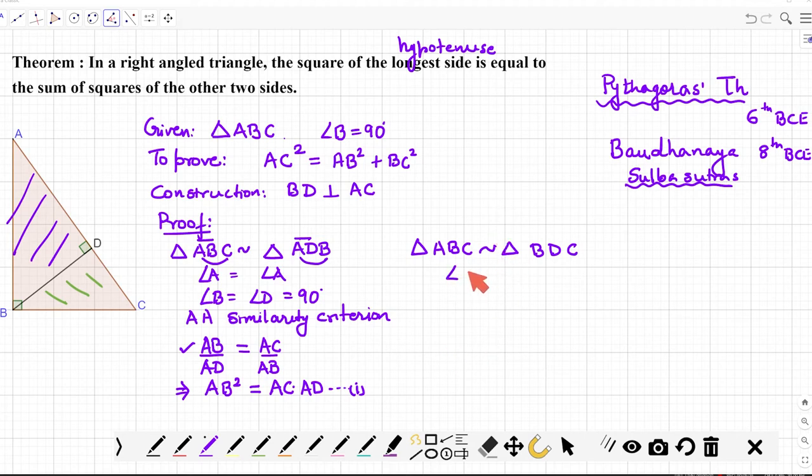So angle C is equal to angle C. Why? Because angle C is common in both. And angle B again 90 degrees, and in this case angle D 90 degrees. So these are the two angles which are equal.